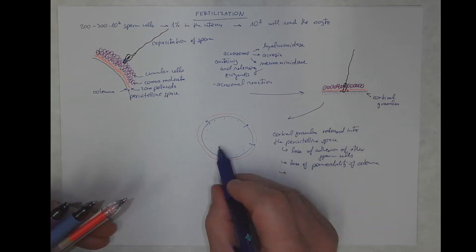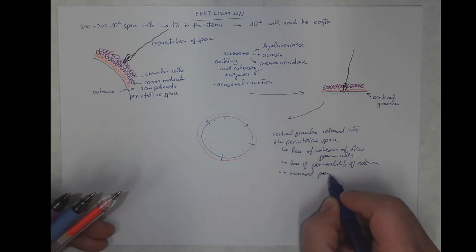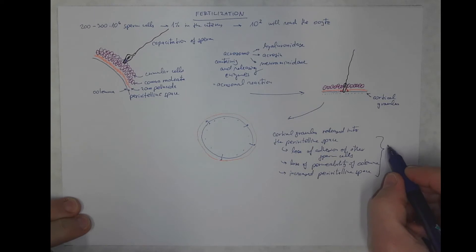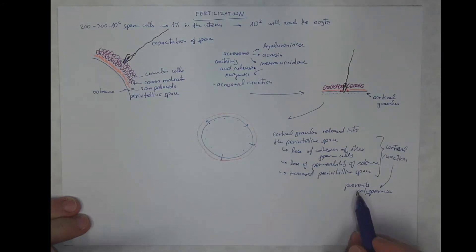So the perivitelline space will become larger. All together, this response is called cortical reaction. And it prevents polyspermy, which would mean one oocyte would be fertilized by more than one sperm cell. So this is not possible and it's prevented mostly by the cortical reaction.